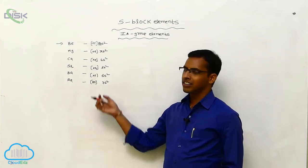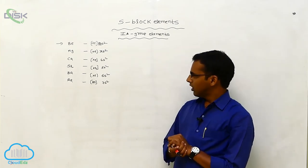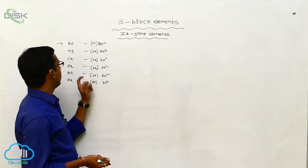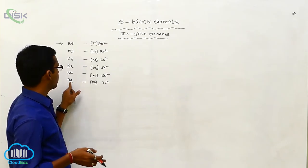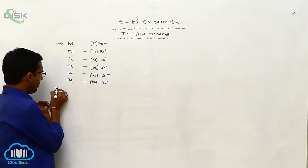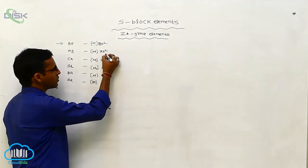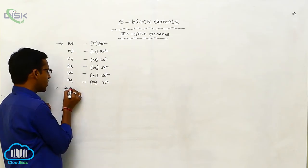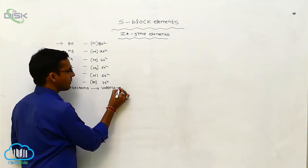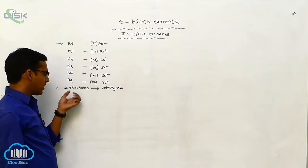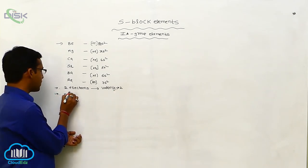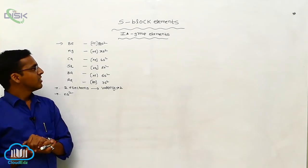These configurations are written in short form according to the nearest inert gas. Note that radium is a radioactive element. For secondary group elements — beryllium, magnesium, calcium, strontium and barium — the outermost shell contains only 2 electrons, so their valence is 2. This is unlike first group elements, whose valence is 1. The differentiating electron enters into the NS2 orbital, which defines secondary group elements.